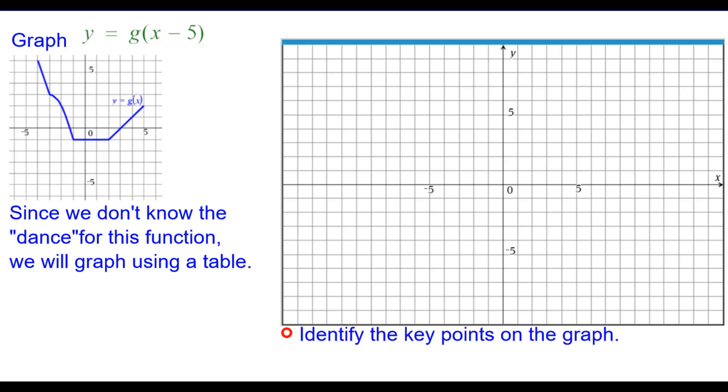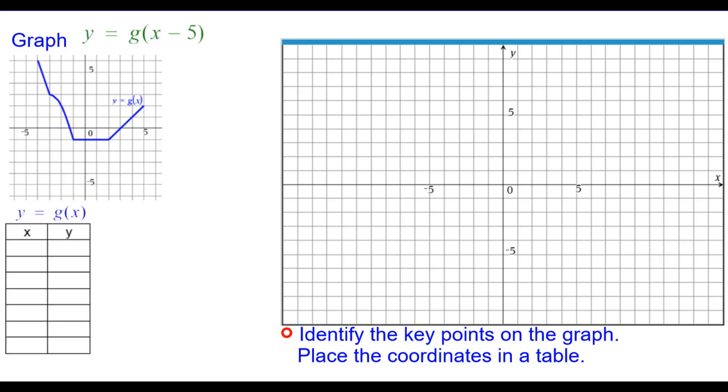We need to first identify the key points on the graph and place those coordinates into a table. So here's our table and this is our first point and it has coordinates negative 4 comma 6. The next key point would be here, negative 3 comma 3, negative 2 comma 2.